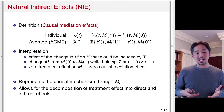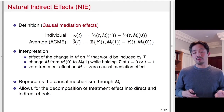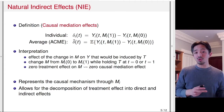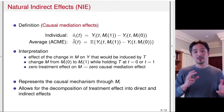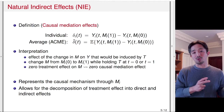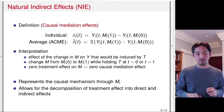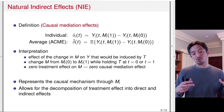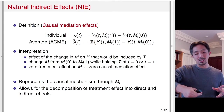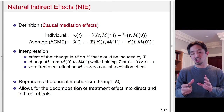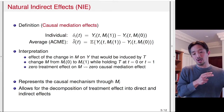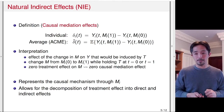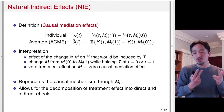More importantly, the NIE allows for the decomposition of the treatment effect into direct and indirect effects, whereas the Controlled Direct Effect does not — it's difficult to connect the CDE to the decomposition of the total effect. The reason is that the CDE is an interventional effect where you directly intervene on M, which is a different intervention than the total effect of changing the treatment alone without intervening on the mediator. Whereas with the Natural Indirect Effect, we are thinking about how the mediator might change when you change the treatment.